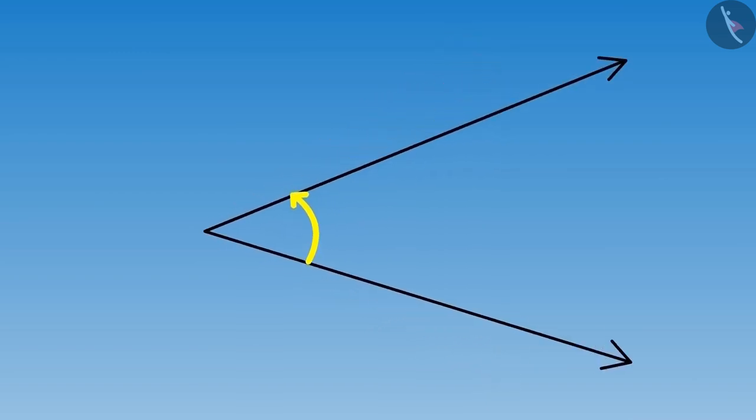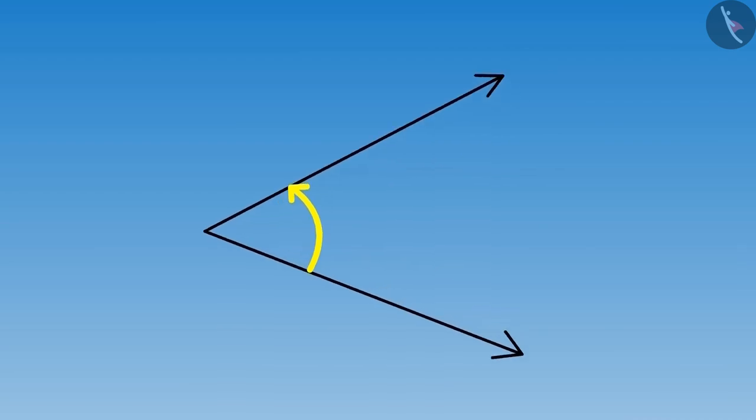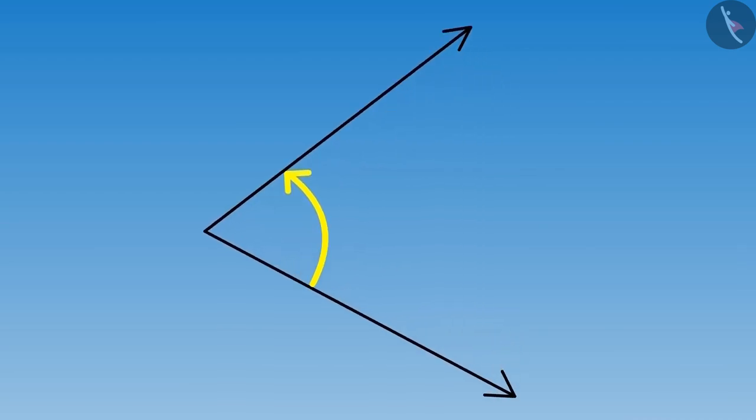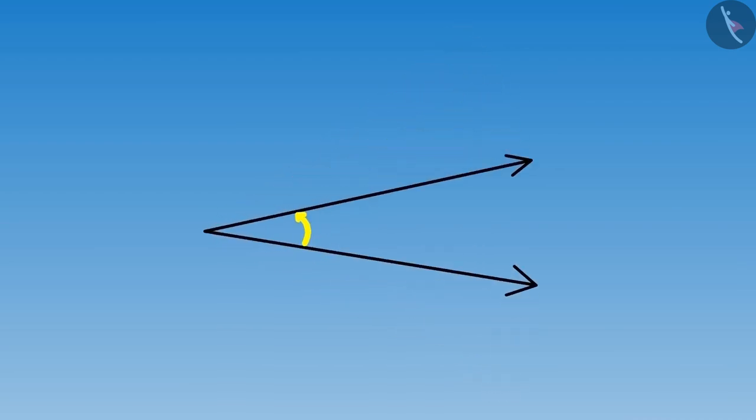Here if I increase or decrease the length of the sides, then there will be no change in the angle. But if I increase or decrease the rotation between the sides, then the angle will increase or decrease.